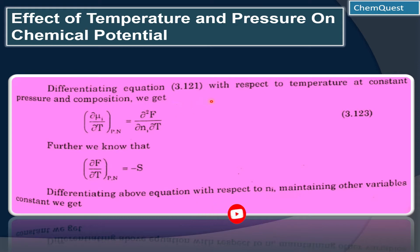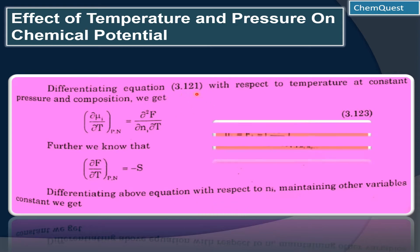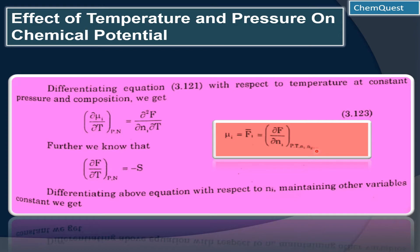Now we will take this equation: μᵢ = F̄₁, which is equal to ∂F/∂nᵢ at constant pressure, temperature, number of moles of component 1 and component 2 — these are also to be kept constant. Now what we have to do is differentiate this equation, and that will give us ∂μ with respect to temperature at constant pressure and number of moles (composition).